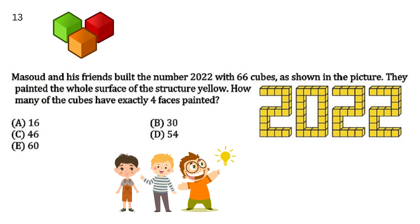Masood and his friends built the number 2022 with 66 cubes as shown in the picture. They painted the whole surface of the structure yellow. How many of the cubes have exactly 4 faces painted? Your options are A 16, B 30, C 46, D 54, E 60.